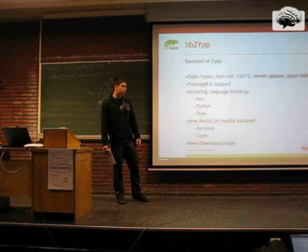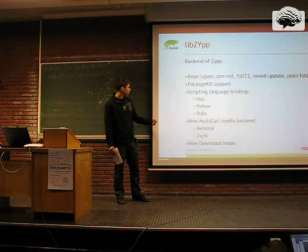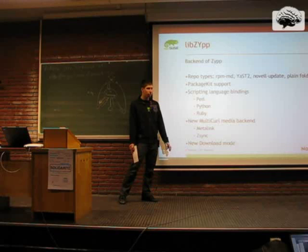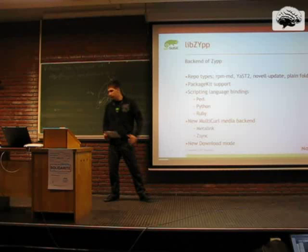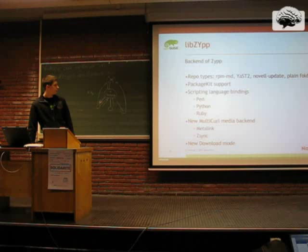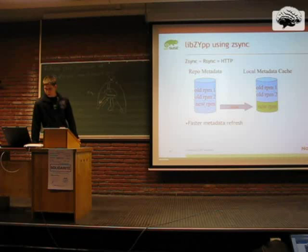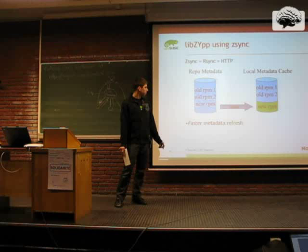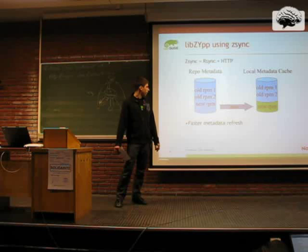It will be very simple to change your update applet or KDE updater to Libzypp, as you have the same interface. New in Libzypp is our new media backend, multi-call, which provides MediaLink and ZSync support, and a new download mode. MediaLink downloads a mirror list and the client can choose which mirror to use. ZSync is like RSync but over HTTP, used when downloading repo metadata — you only download the new RPM data, so you don't have to wait forever on a slow connection.